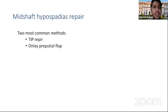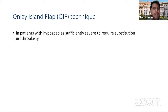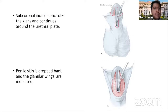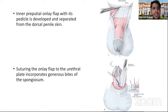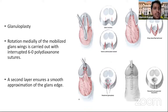For mid-shaft hypospadias, two options exist: TIP repair or onlay preputial flap technique. In the onlay excellent flap technique for patients requiring substitution urethroplasty, a subcoronal incision encircles the glans and continues around the urethral plate. The penile skin is dropped back, glanular wings are mobilized, and the inner preputial onlay flap with its pedicle is developed and separated from the dorsal penile skin. The onlay flap is then sutured to the urethral plate incorporating generous bites of the spongiosum, followed by glanuloplasty and rotation of mobilized glans wings with interrupted 6-0 polydioxanone sutures. A second layer ensures smooth approximation of the glans edges.